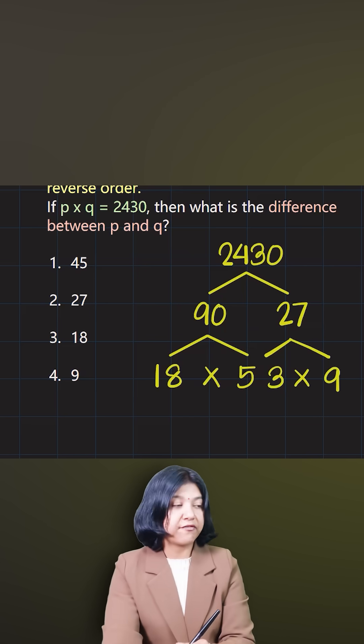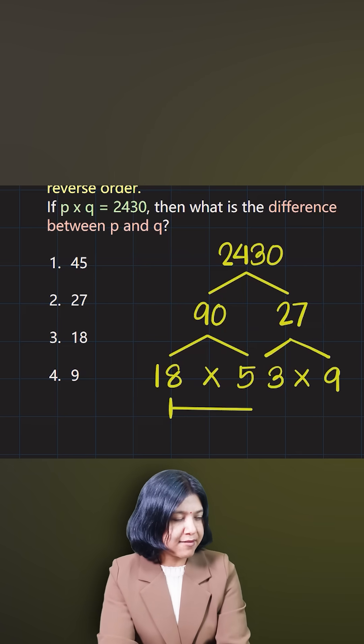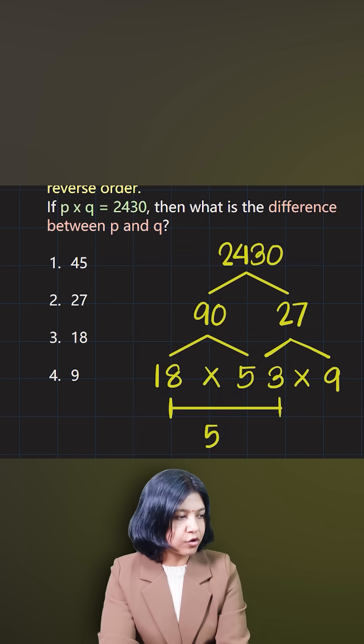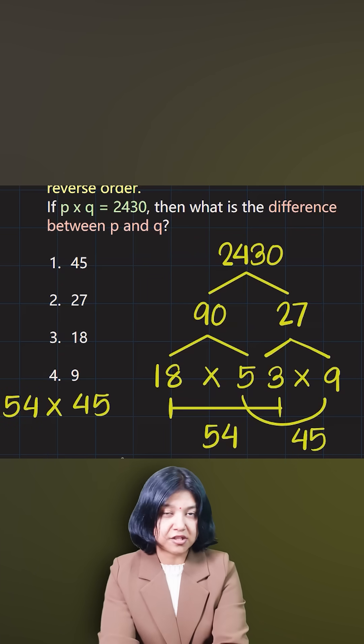Let me figure out if I can get two closest numbers possible. If I take 18 times 3, that gives me 54, and if I take 5 times 9, that gives me 45. So I got the two numbers to be 54 and 45 such that they can be obtained by reversing the digits.